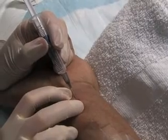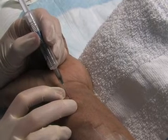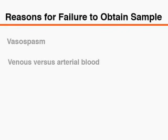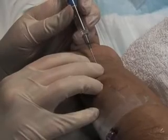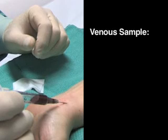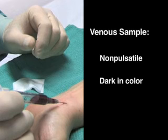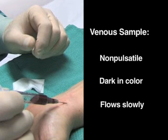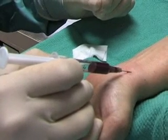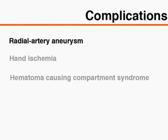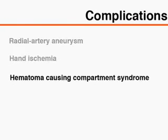The most common technical difficulty associated with radial arterial puncture for arterial blood gas analysis is failure to obtain a blood sample because of vasospasm, or obtaining venous instead of arterial blood. If vasospasm is suspected, abort the procedure and re-attempt it on the other wrist. A blood sample is likely to be venous if it is non-pulsatile, dark in colour, and flows slowly. It should be noted, however, that very deoxygenated blood in a patient with hypoxemia could also appear dark even though it is arterial. Serious vascular complications are rare and include radial arterial aneurysm, hand ischemia, and hematoma-causing compartment syndrome.